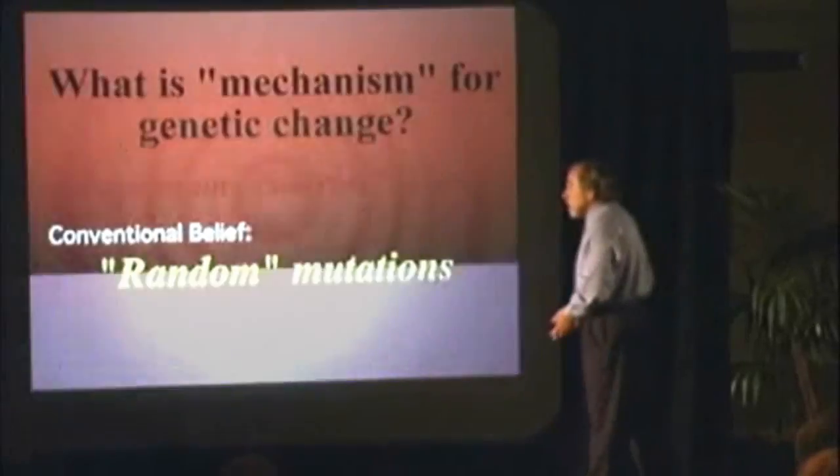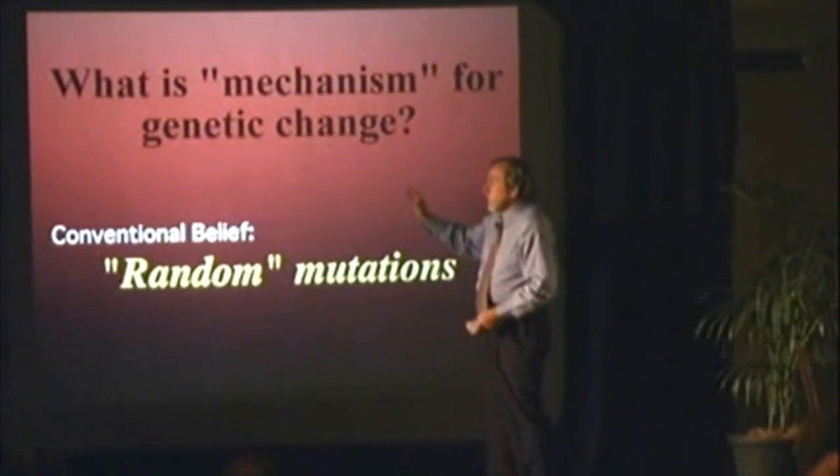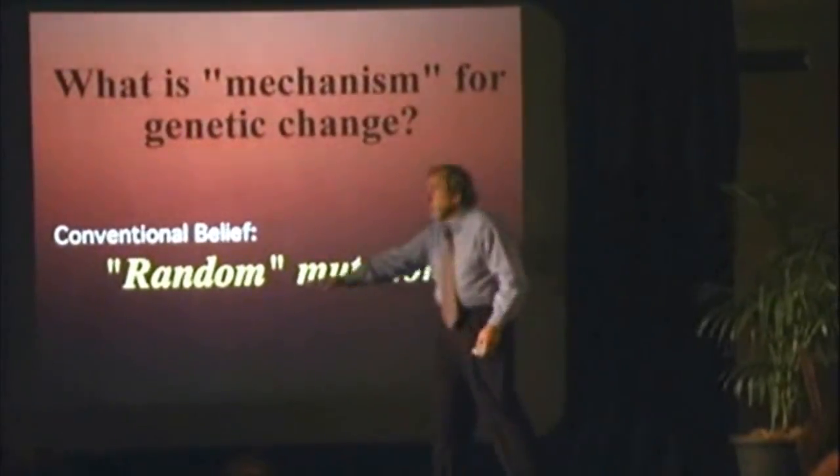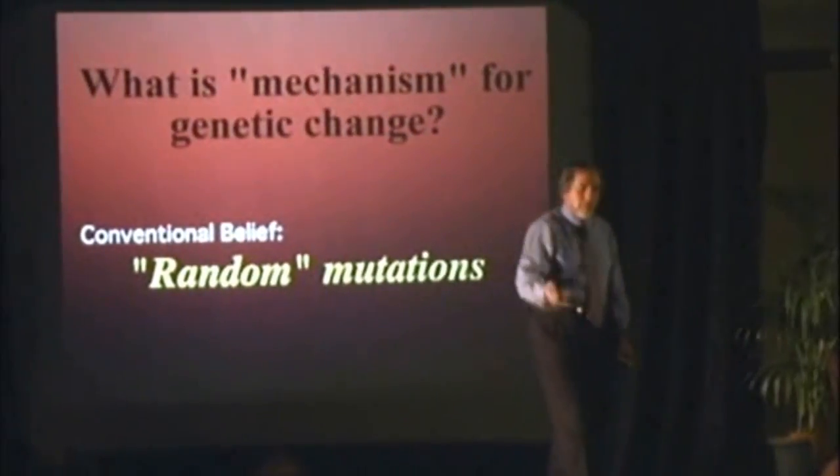Here's the third part. What happens if you run into a stressful environment and you don't have the appropriate genes to respond to that stress? The only way you're going to manage is to change the genes. In conventional biology, the only way genes change is a process called random mutation — this is in all the textbooks.